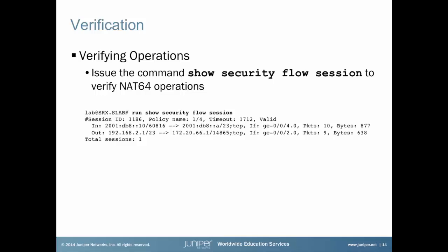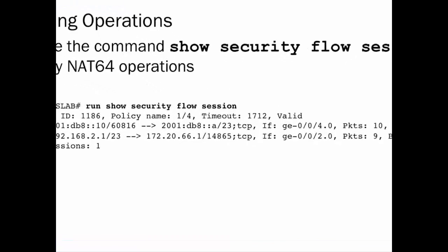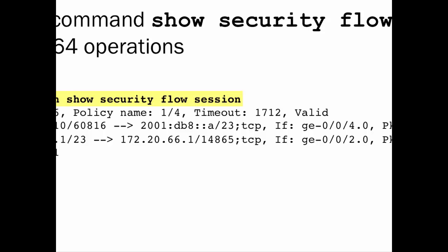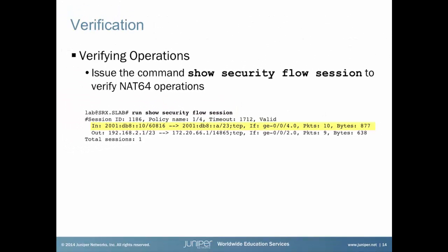Assuming that our configuration is correct, we can verify the NAT translation from IPv6 into IPv4 with the command show security flow session. We see in the second line that we have a source IP in IPv6 trying to connect to an IPv6 destination IP, and the answer packet is coming back from an IPv4 source IP to an IPv4 destination IP.